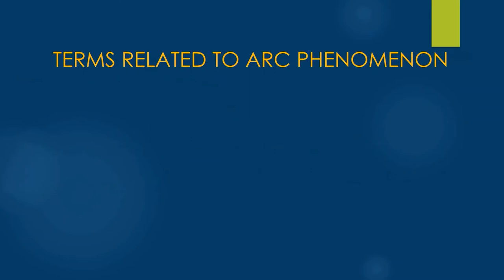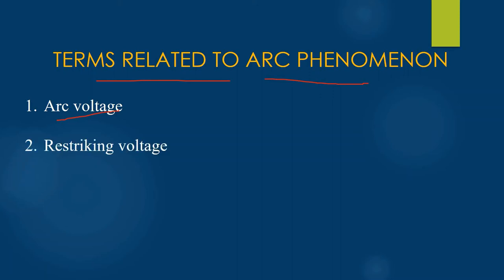There are some important terms which are related to the arc phenomenon and therefore need to be studied. First, arc voltage. Arc voltage is defined as the voltage that appears across the contacts of the circuit breaker during the arcing period. When a fault appears, the contacts of the circuit breakers are separated and arc is formed between them. The voltage that appears across the contacts during this arcing period is known as arc voltage.